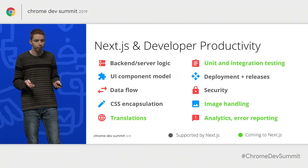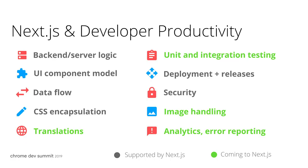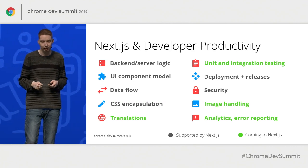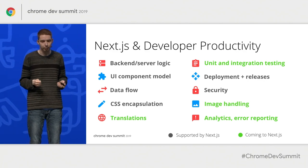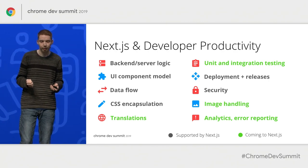These are the things we're currently working on to help you build more scalable web applications: translations, unit testing and integration testing, image handling — images make up a large percentage of what you show on a website, but we don't provide an opinionated way to load images currently, making it easy to include images that are too large. There's also analytics, which you probably all use, and correctly implementing analytics in single-page applications is really hard.